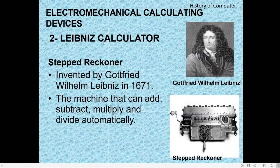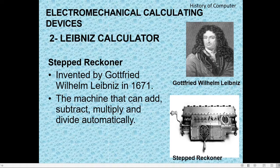The second Electro-Mechanical Calculating Device was Leibniz's Calculator, invented by Gottfried Wilhelm Leibniz in 1671. This machine was known as the Stepped Reckoner. It could perform addition, subtraction, multiplication, and division automatically.